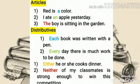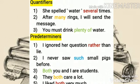Can you understand? Either means one or another one. Neither means not one or the other. Either is used in negative constructions and neither is used in affirmative constructions. This is called quantifiers. 'She spilled water several times.' 'After many drinks, I will send the message.' 'You must drink plenty of water.' Here, 'several,' 'many,' and 'plenty of' are called quantifiers because they refer to quantity, and quantifiers come under the category of determiners.